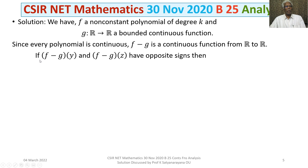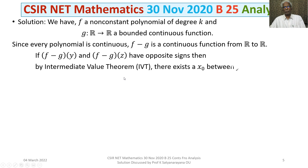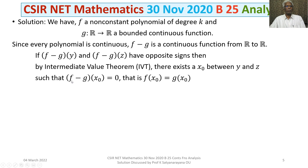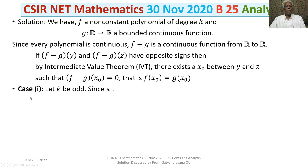If F minus G evaluated at Y and F minus G evaluated at Z have opposite signs, then by the Intermediate Value Theorem there exists an element X₀ between Y and Z such that F minus G of X₀ equals 0, that is F(X₀) equals G(X₀). We will use this result to establish the relevant options. Case 1.